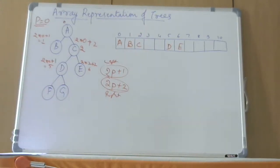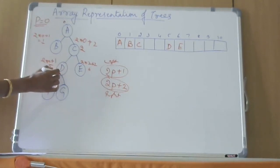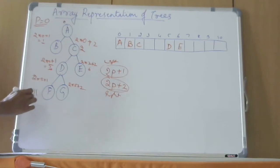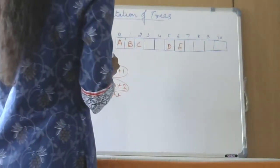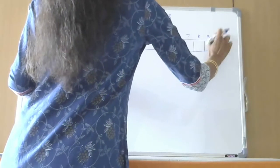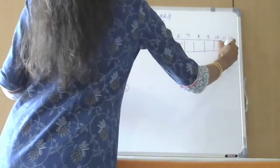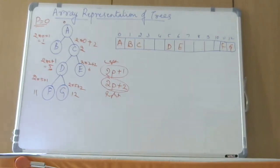Now let us place F and G. F is the left child and G is the right child of D. The parent node D is at position 5. So left child F will be at 2 times 5 plus 1, which is 11. Right child G will be at 2 times 5 plus 2, which is 12. So in positions 11 and 12, we place F and G respectively. This is how we store nodes in the array representation of trees.